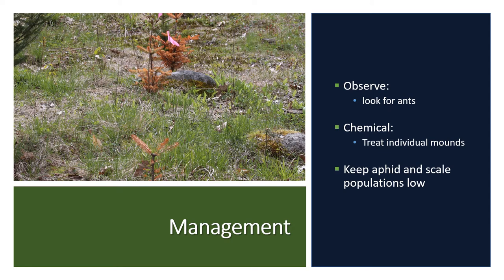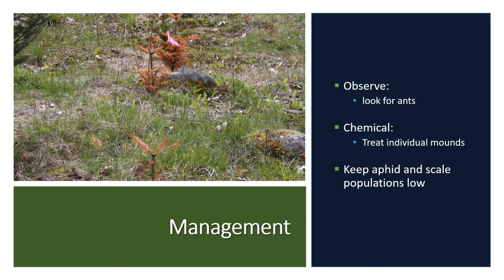Allegheny mound ants kill all vegetation within 20 feet of their mounds, including large trees in the area, so it is important to manage them. If you see evidence of the Allegheny mound ant, treat individual mounds with a registered pesticide between mid-April and October. Another helpful strategy is to keep aphid and scale populations low, as ants benefit from the honeydew produced by these sucking insects. This concludes the insect and mite section, but keep in mind there are other insects not covered here that you may encounter. Review your study manual for other pests not covered in this section.